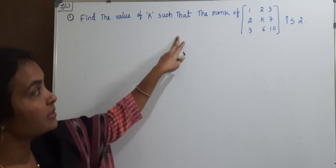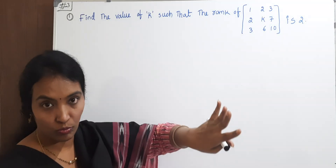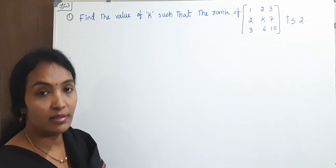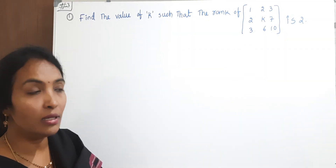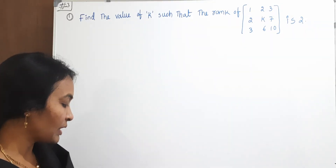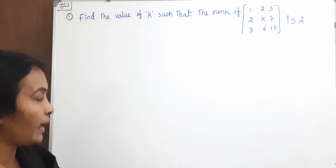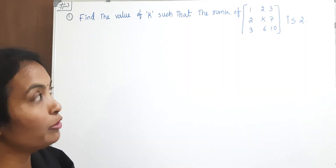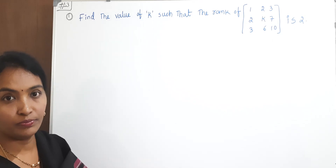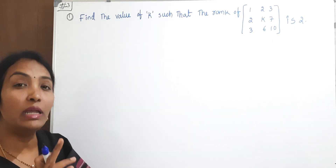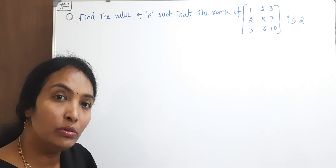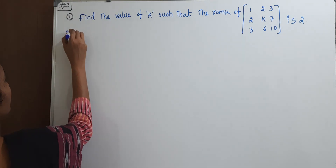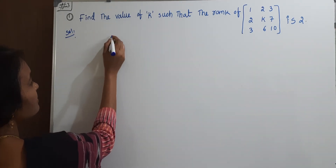Find the value of k such that the rank of this matrix is 2. The given matrix rank is 2, and we need to find the unknown value k. If the rank is 2, what is the determinant of this 3×3 matrix? Rank 2 means the determinant will become 0. I need to find the determinant of the given matrix.